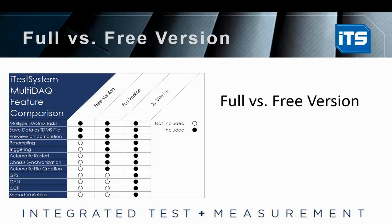The full version includes resampling and triggering, which we're going to talk about in a later webinar. Chassis synchronization is a really big one — if you're going to use those 9469 modules to synchronize your chassis together, you'll want the full version to be able to do that. We also have the Multi-DAC XL version, which comes with a couple more features: GPS, CAN, CCP, and shared variables are all part of that. We do have another webinar planned for Multi-DAC XL later, if you're interested in those particular features.